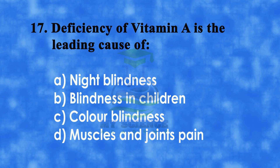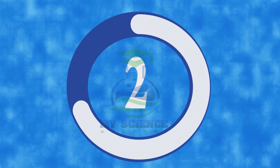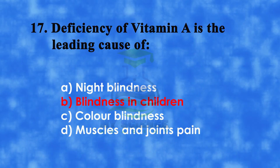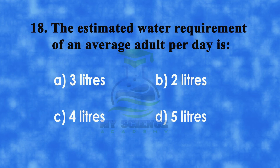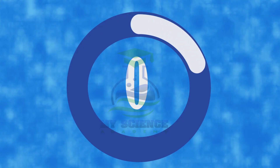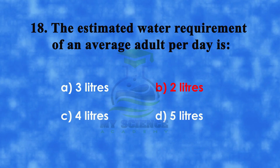Question number seventeen: deficiency of vitamin A is the leading cause of — a) night blindness, b) blindness in children, c) color blindness, or d) muscle and joint pain. The correct answer is b) blindness in children. Question number eighteen: the estimated water requirement of an average adult per day is — a) 3 liters, b) 2 liters, c) 4 liters, or d) 5 liters. The correct answer is b) 2 liters.